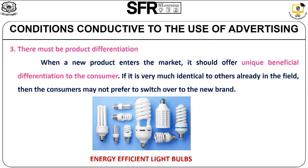The third condition is there must be product differentiation. While doing advertising, the manufacturer has to differentiate his product among the competitors. For example, if the manufacturer wants to advertise an electric bulb, he has to differentiate his product by highlighting features like energy efficiency, and mention that in the advertising.